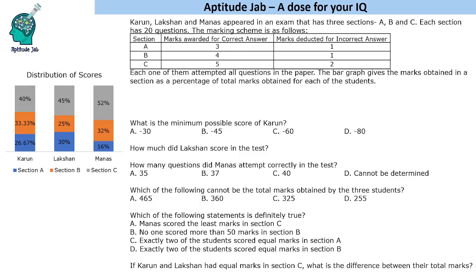First, we need to understand this graph — it is important to convert these percentages into fractions. If we see 26.67%, knowing that 1/15 is 6.67% and 3/15 is 20%, adding gives 4/15. Then 33.33% is one-third, which is 5/15, and 40% is 6/15. So for Karun, the ratio of scores in Section A : Section B : Section C is 4 : 5 : 6.